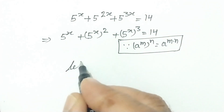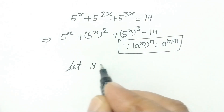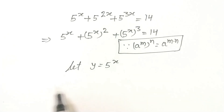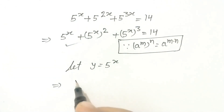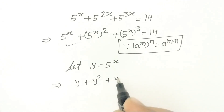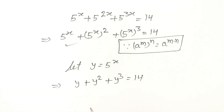Let y equal 5 to the power x. So this equation will change to y plus y squared plus y cubed is equal to 14.